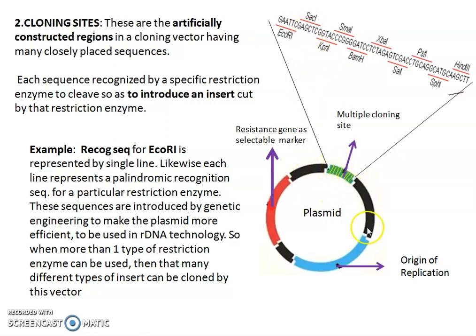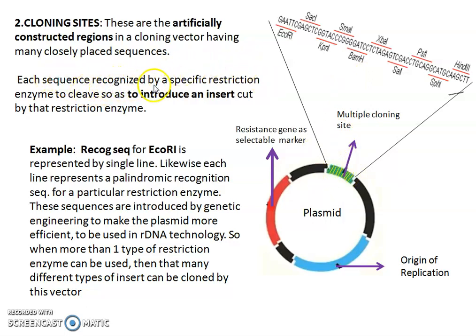The reason for having multiple sequences is so that you can use the same vector for different types of inserts. One insert may be brought by cleaving with enzyme ECO R1, so you introduce it in the area cleaved by ECO R1 in the plasmid. For another purpose, using the same plasmid, you can bring an insert cleaved by BAM H1 — so the BAM H1 recognition sequence should also be present. Please make sure restriction enzymes are very clear to understand this cloning site.